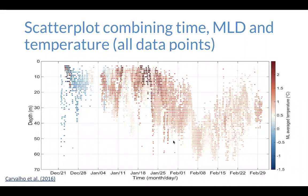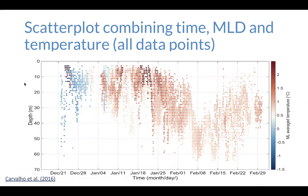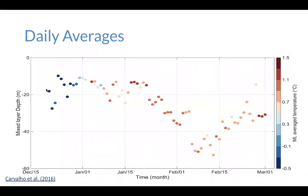The next thing she did was merge them into one graphic, using a color scheme to show — indicated along the far right-hand side — what the average temperature was. She plotted depth and time, with the color of the dot indicating temperature. She thought, 'I'm starting to get a better sense of what's going on,' but there was still a lot of variation. So she took the averages: for every day, the location of the dot represents the average mixed layer depth and the color represents the average temperature.